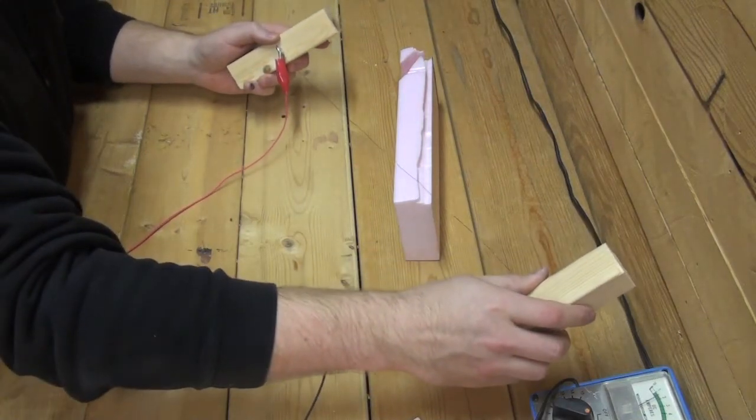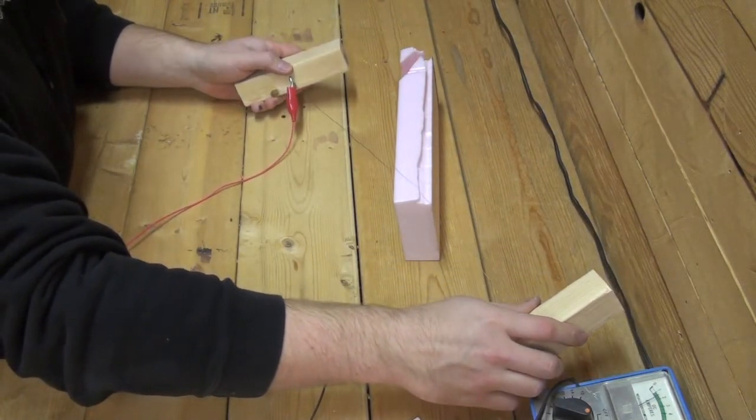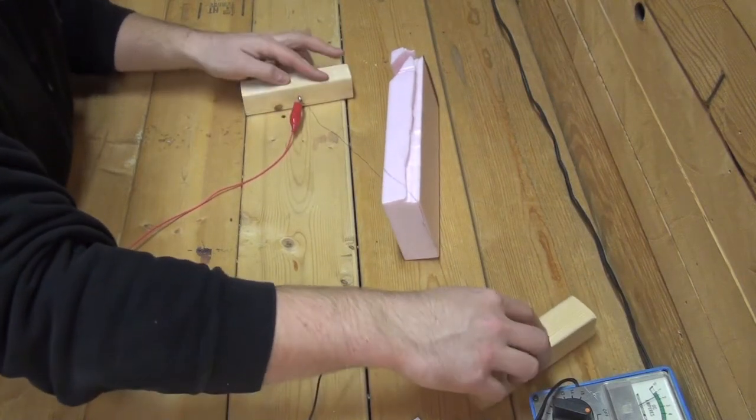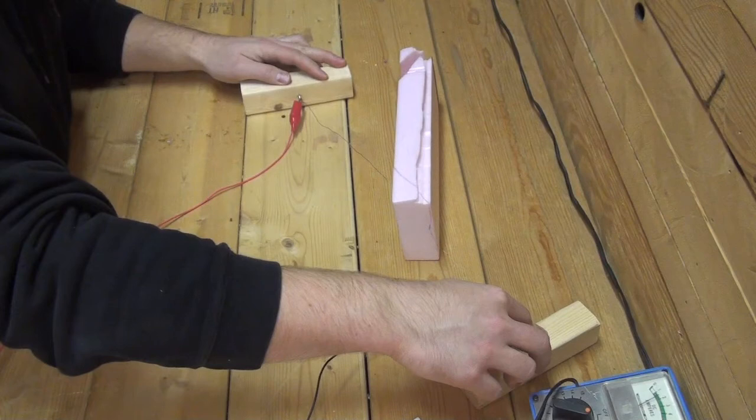Because the electricity will only flow through the wire that lies between the alligator clips, you can not only alter the length at which you're cutting, but also the temperature of the wire.